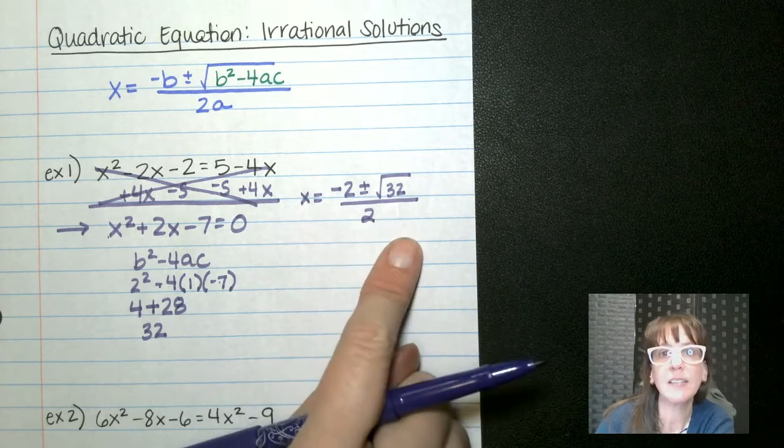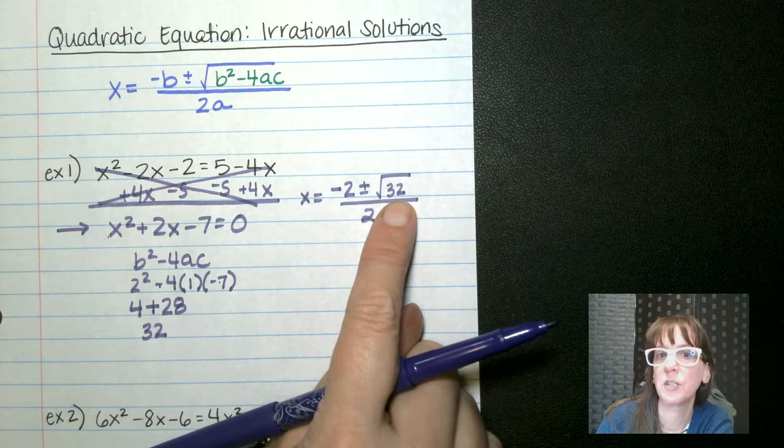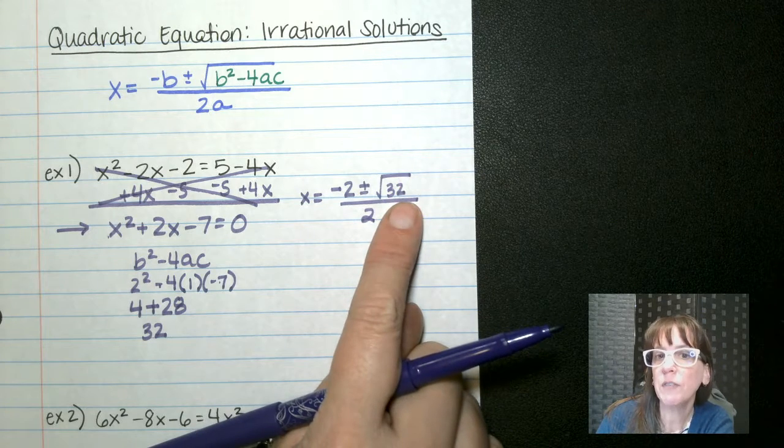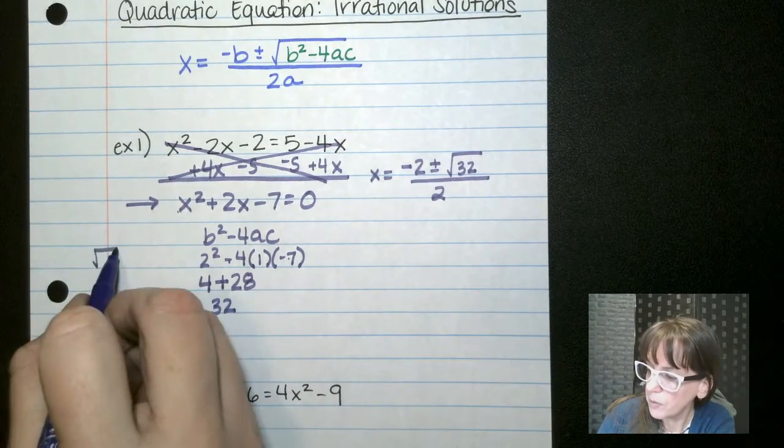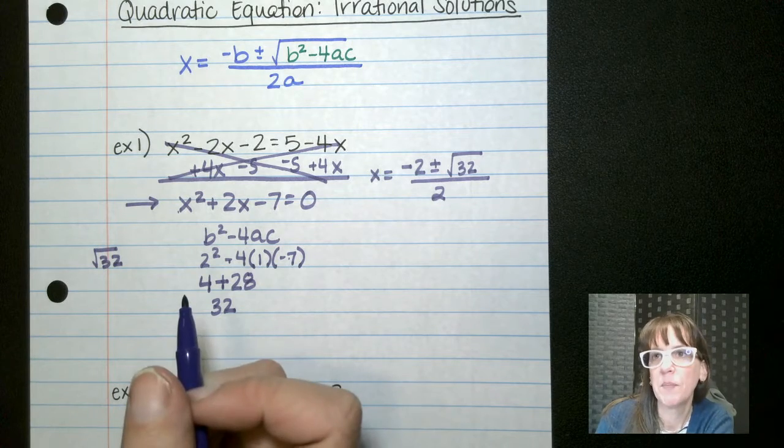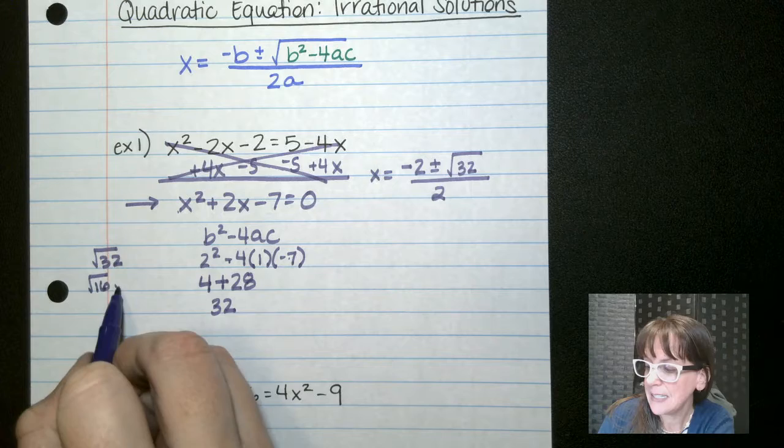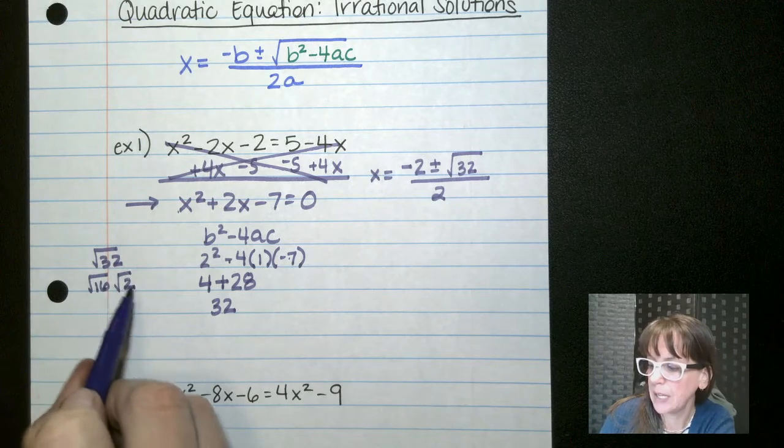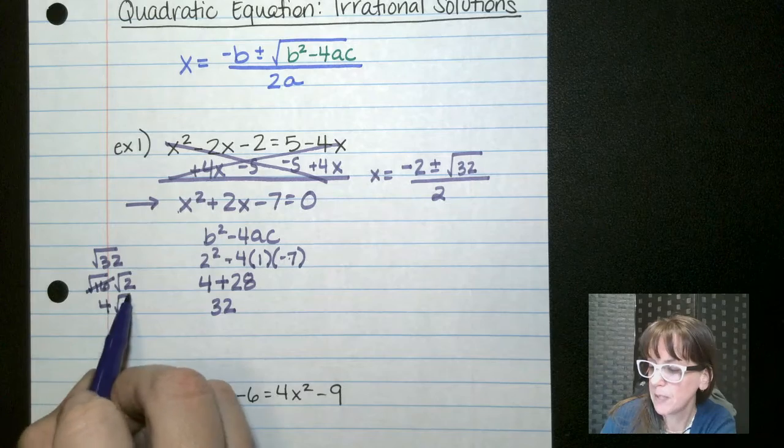Now this may look like it's complete, but remember, when we have a radical, we want to simplify it as much as possible. So we're looking for the largest perfect square that's hidden in there. Let's do some side work. The square root of 32, 4 is hidden in there, but there's a larger one, which is 16. 16 times 2 would give me 32, and the square root of 16, that's 4. So 4 root 2.